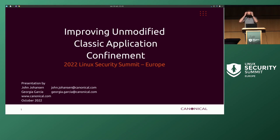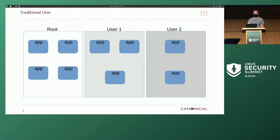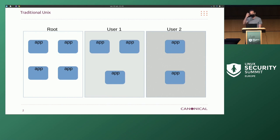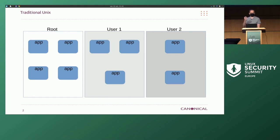So, the traditional Unix model — we all know it. We have root, and it has apps all together. We're basically separating apps from user to user, and a lot of stuff is written with these design constraints in mind. We really want to be moving more into what you see with Android, where user applications are confined, some root applications are confined — maybe everything is. We've been doing this with some success, though some people don't like it so much.